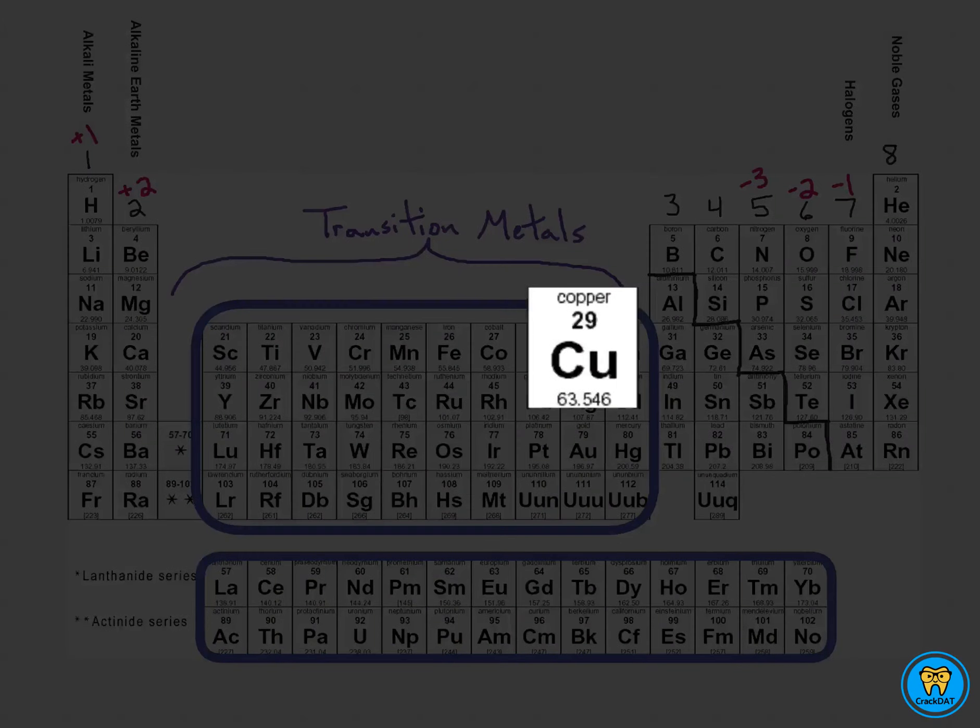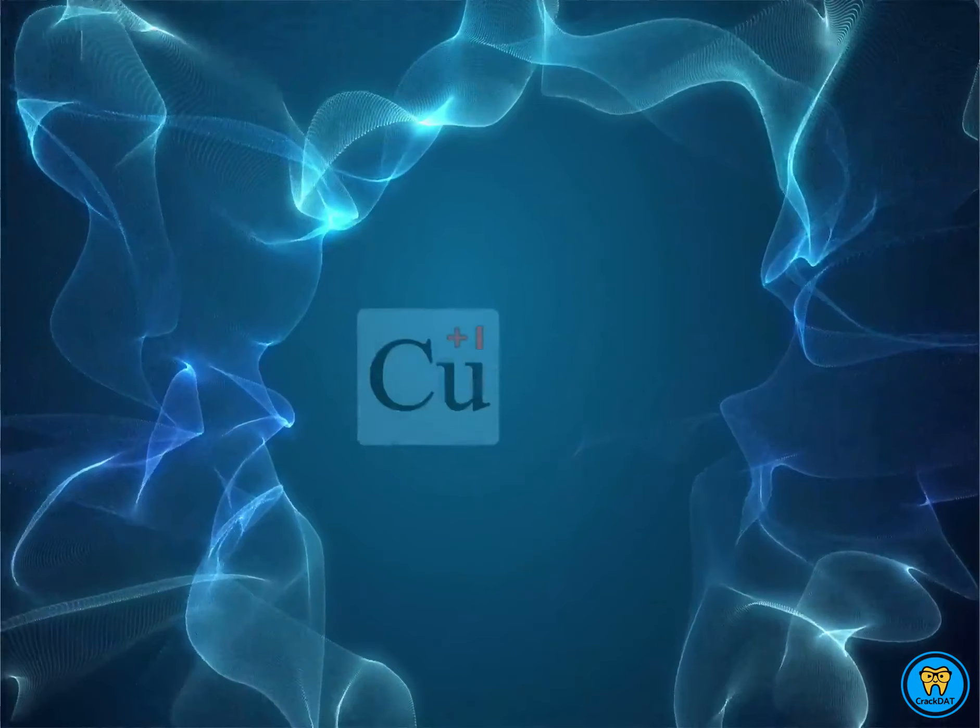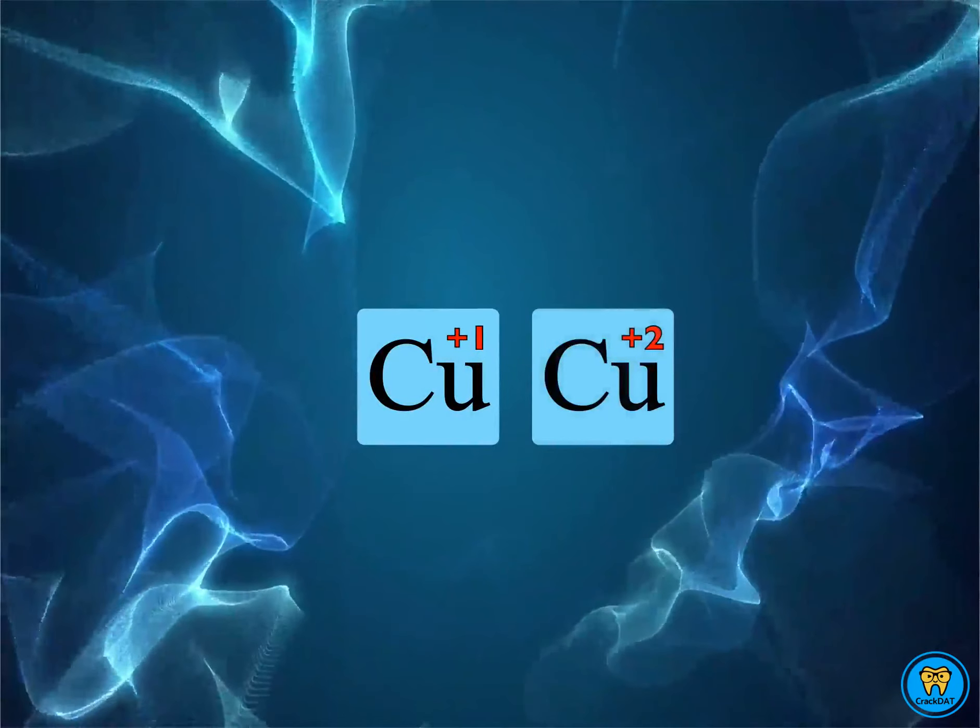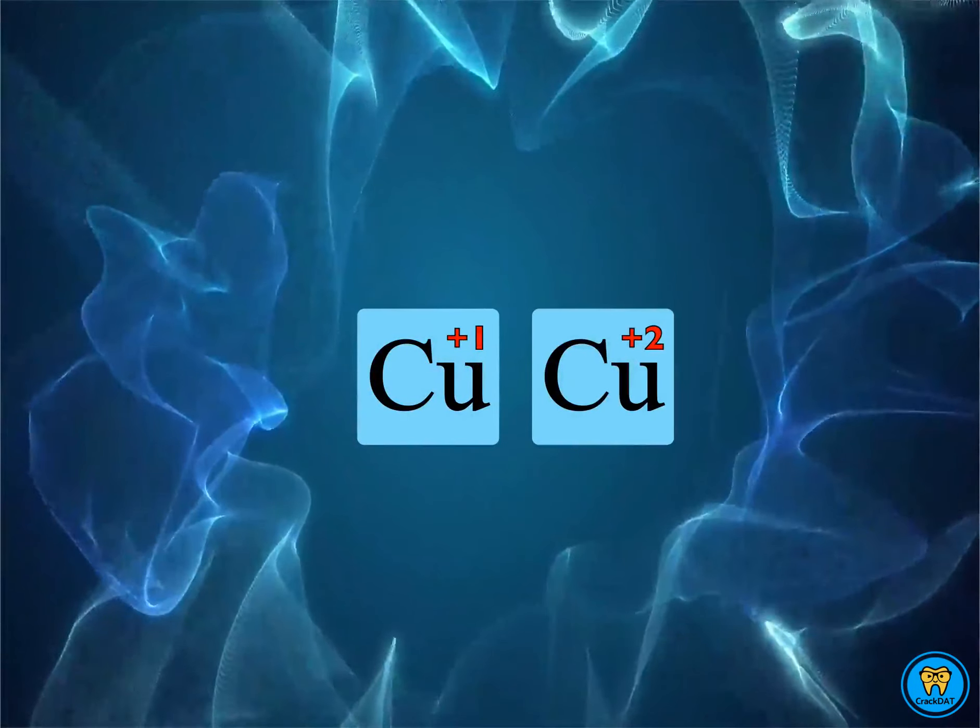For example, let's look at copper. In nature, copper is found as copper 1, meaning that it has a plus 1 charge, and copper 2, meaning that it has a positive 2 charge.